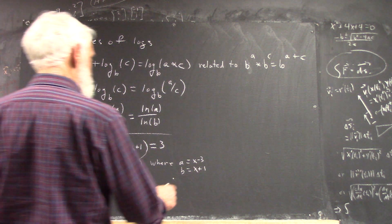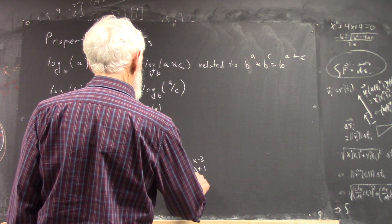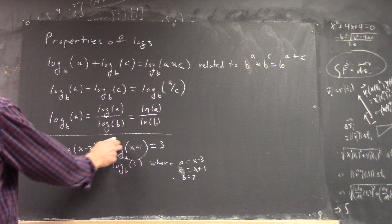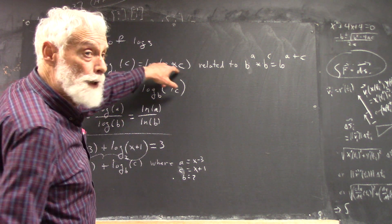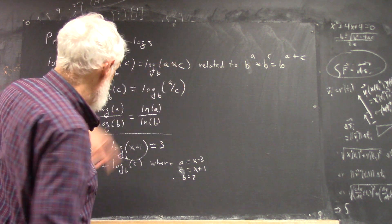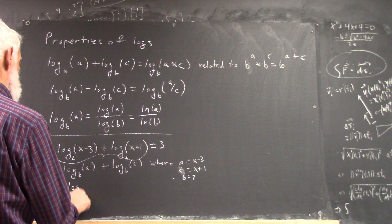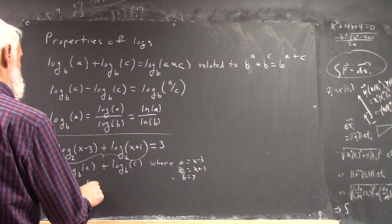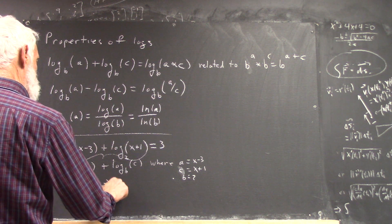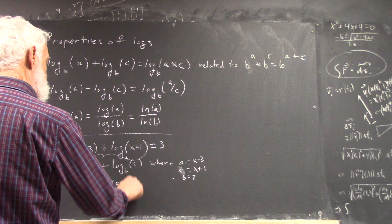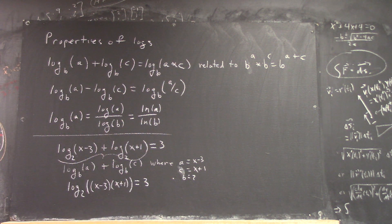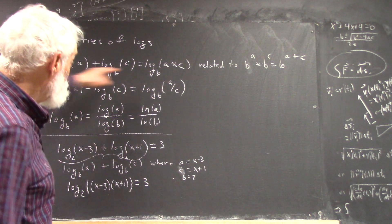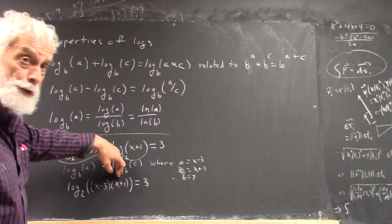And of course B is 2. That C is X plus 1 and B is 2. So we could rewrite this as log base B of A times C. So this is a log base 2 of X minus 3 times X plus 1. That's got to equal 3. Okay, just applying this rule, we rewrite this in this form.